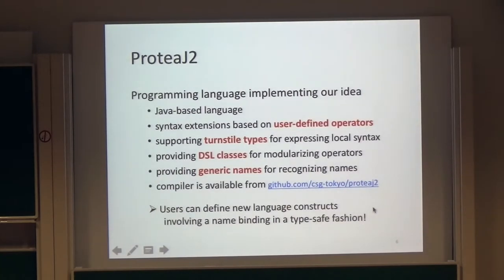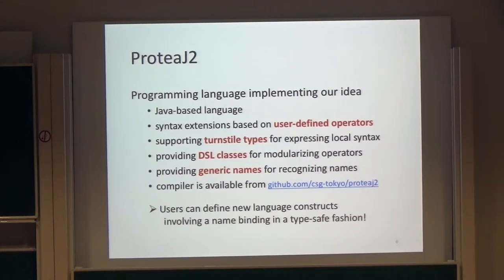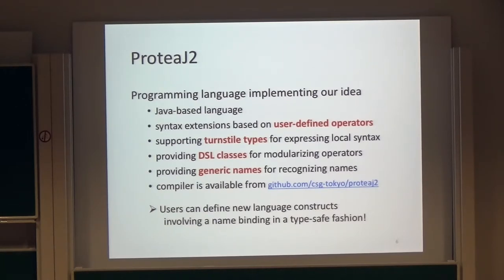We have implemented a programming language supporting this proposal. We have named the language ProTJ2. In ProTJ2, users can define new language constructs involving new name bindings in a type-safe fashion. ProTJ2 is a Java-based group programming language that supports very flexible user-defined operators. ProTJ2 also provides features called DSL class and generic names, which help users define their own language constructs involving name bindings.